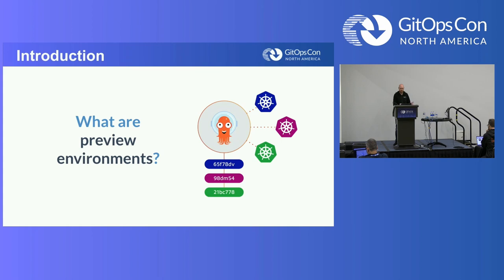Here in this image, the simplest diagram I could have is: you have some developer action that is resulting in some Kubernetes resource — whether it's a cluster or namespace. That's what we're going to talk about today and how we're going to do that.